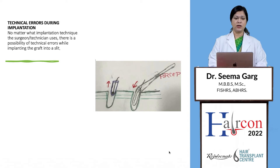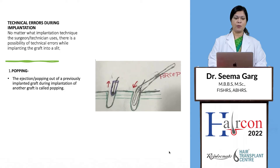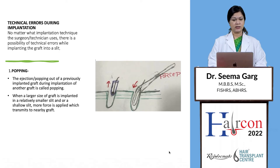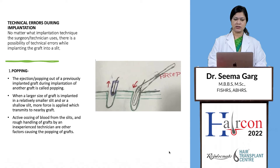Regarding technical errors — no matter what implantation technique a surgeon or technician uses, there is a possibility of errors while implanting the graft. The first is popping: popping is the ejection of a previously implanted graft during implantation of another graft. When a larger graft is implanted in a relatively smaller or shallower slit, more force is applied and transmitted to the nearby graft. Active oozing of blood from the sites and rough handling by an inexperienced technician are additional factors causing popping.